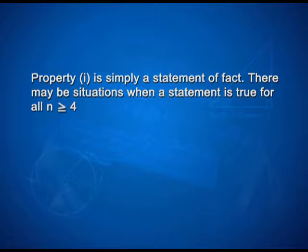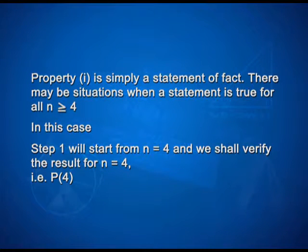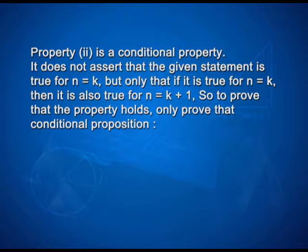Here, property 1 is simply a statement of fact. There may be a situation when a statement is true for all n greater than or equal to 4. In this case, step 1 will start from n equals 4 and we shall verify the result for n equals 4, that is P of 4. Whereas property 2 is a conditional property. It does not assert that the given statement is true for n equals k, but only that if it is true for n equals k, then it is also true for n equals k plus 1.